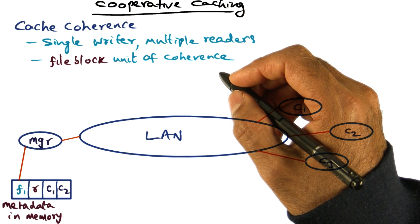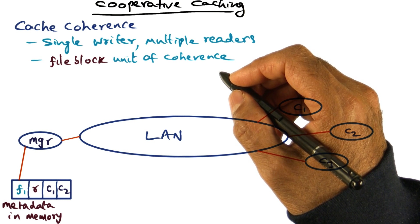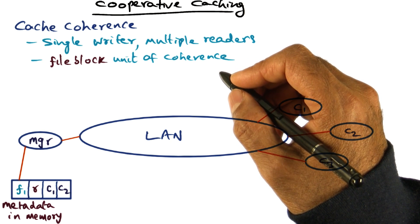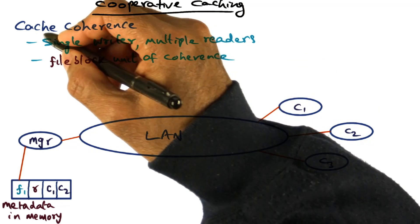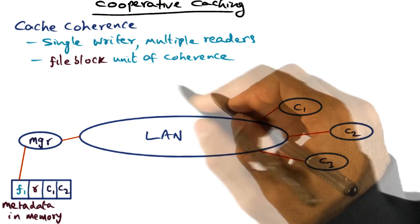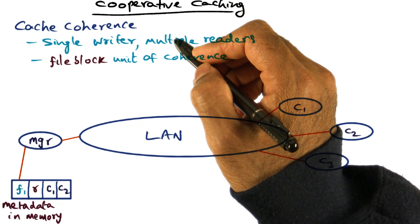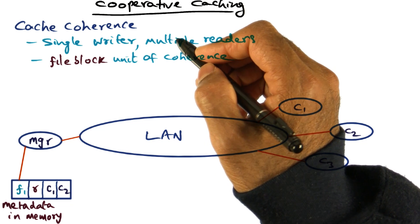If a particular file happens to be accessed by multiple users at the same time, the server doesn't worry about the coherence of that file. But on the other hand, in XFS, the file system worries about cache coherence. And I've already introduced the idea of cache coherence in the context of multiprocessors and distributed shared memory.